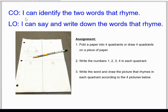Our content objective is: I can identify the two words that rhyme. Our language objective is: I can say and write down the words that rhyme.